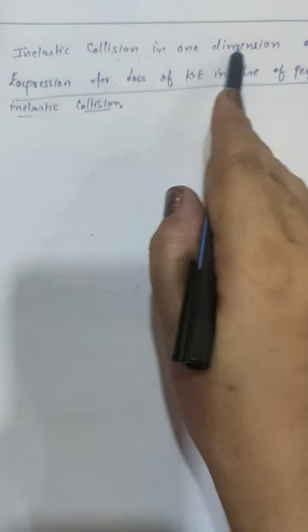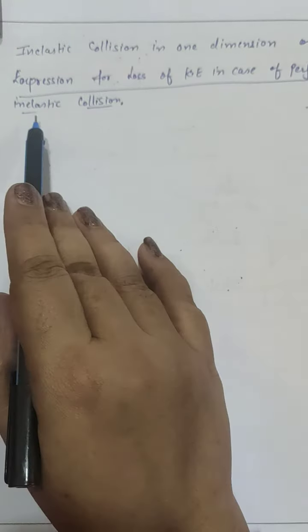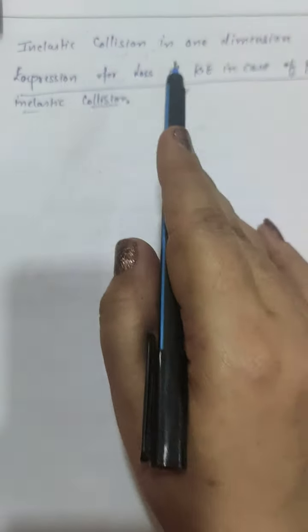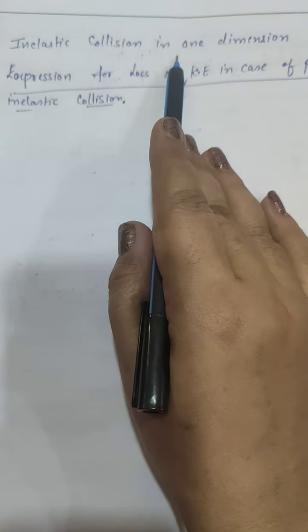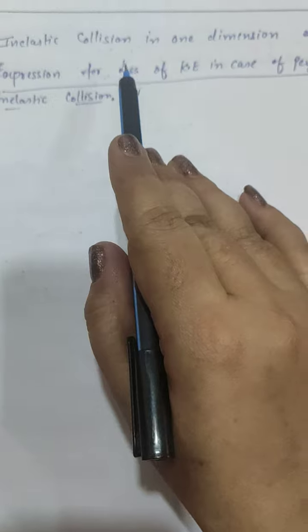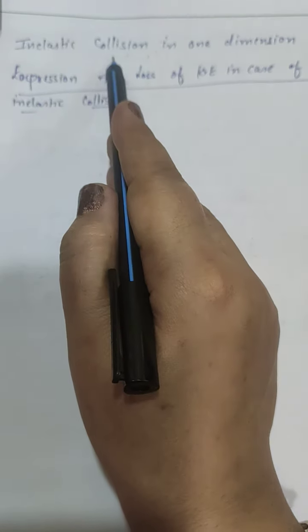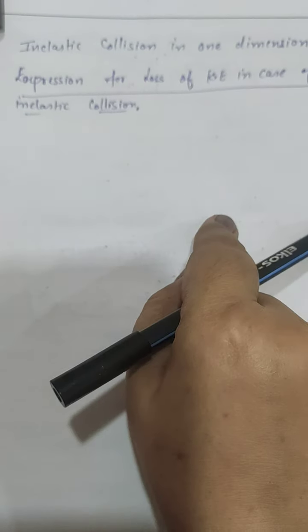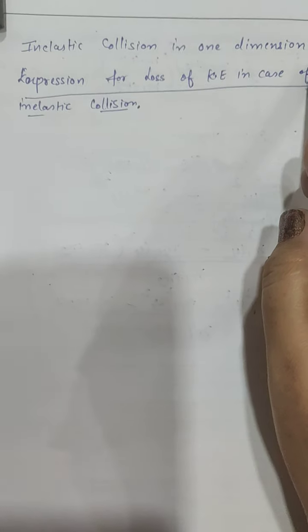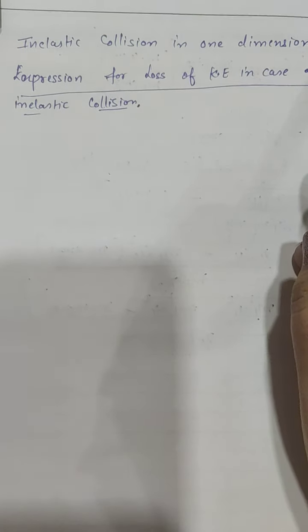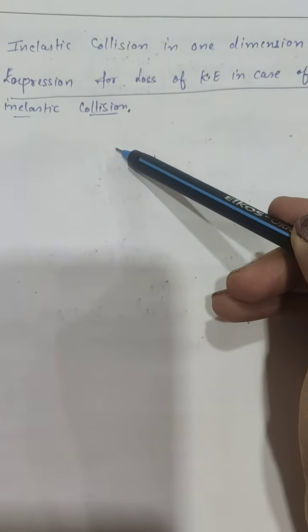Inelastic collision in one dimension, or expression for loss of kinetic energy in case of perfectly inelastic collision. Inelastic collision in one dimension means the two bodies are moving in a straight line and there occurs a loss of kinetic energy. The basic characteristics of inelastic collision are: linear momentum is conserved, total energy is conserved, but kinetic energy is not conserved. Since kinetic energy is not conserved, there must be some loss of kinetic energy, which we will find out in this video.